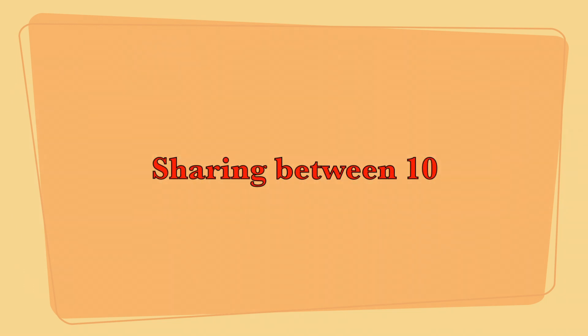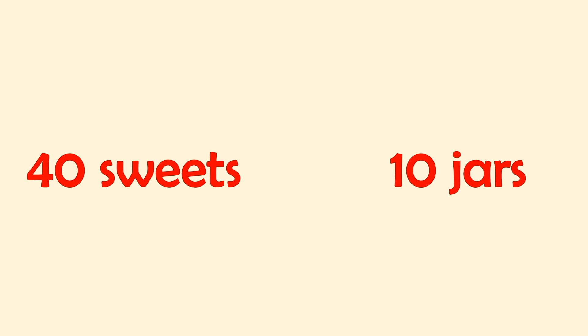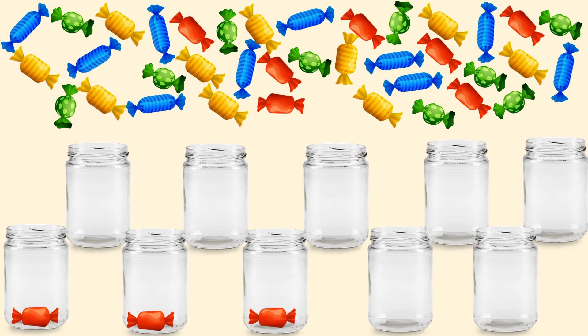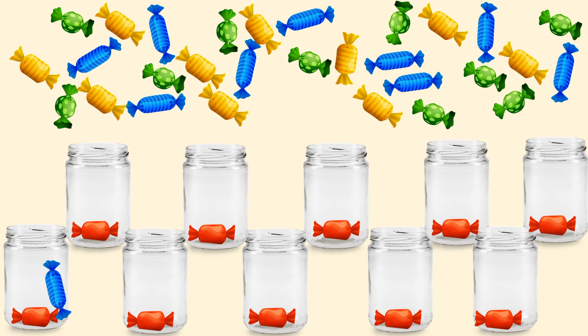Sharing between ten. This time we are going to share equally forty sweets between ten jars. So let's start placing sweets one by one in the jars: one, two, three, four, five, six, seven, eight, nine, ten, eleven, twelve, thirteen.